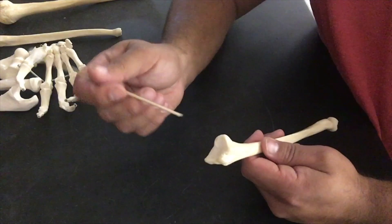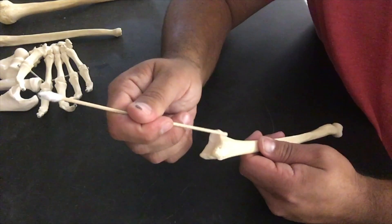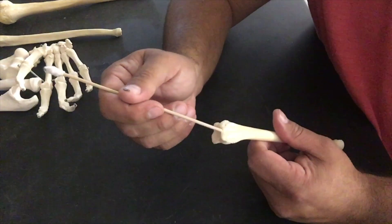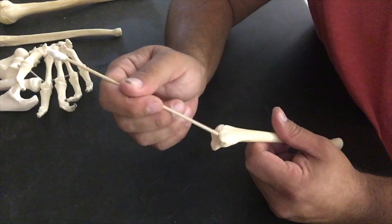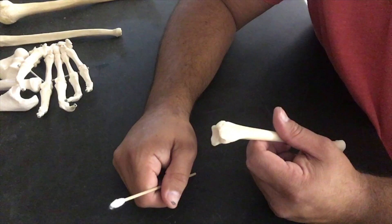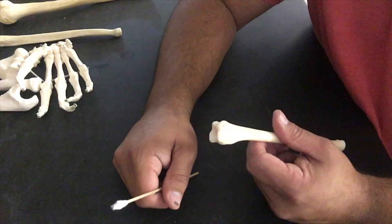Then we go to our opposite end over here, where you have your ulnar notch where the head of the ulna is going to rotate in, and again, a really large styloid process.